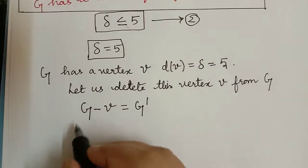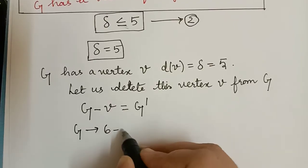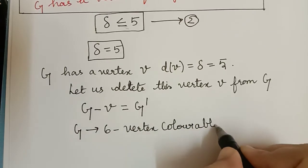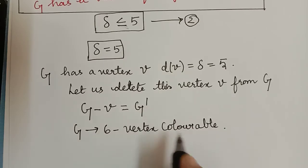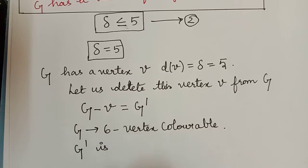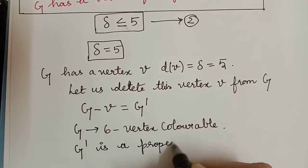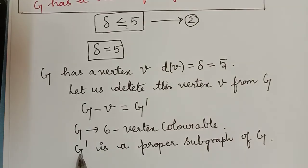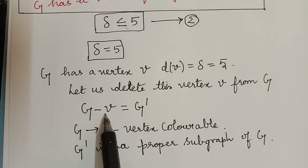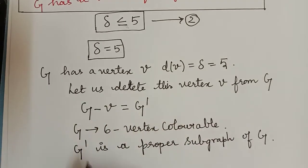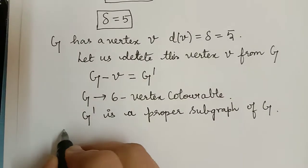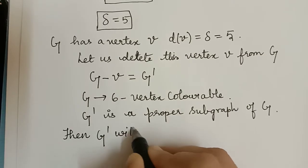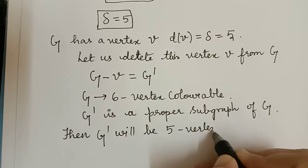We already know that G is 6-vertex colorable by our assumption. Because G is 6-vertex colorable and G dash is a proper subgraph of G, G dash will be 5-vertex colorable.